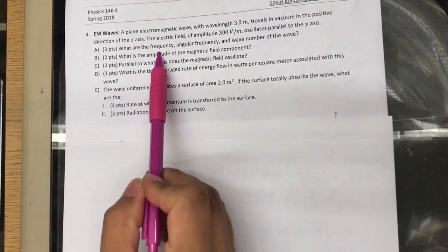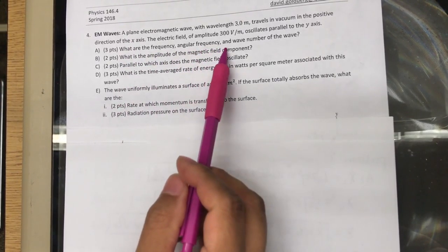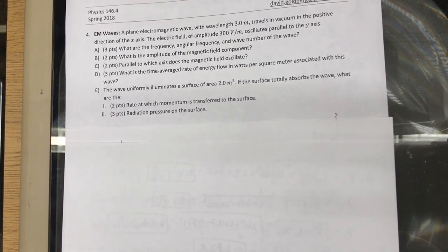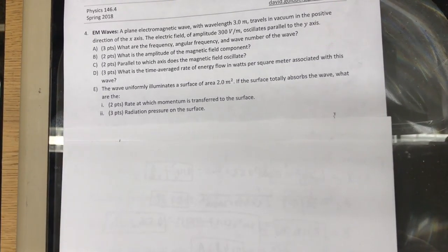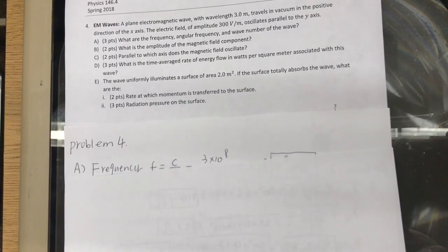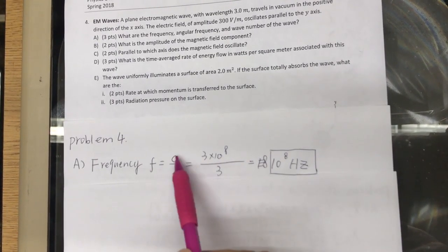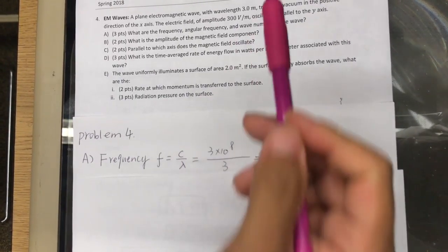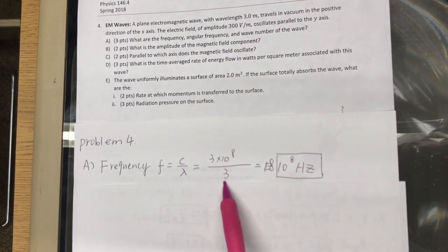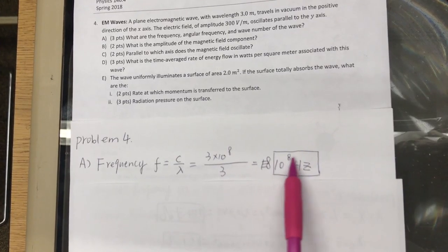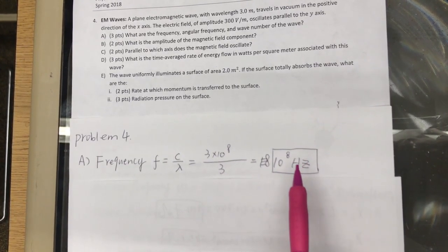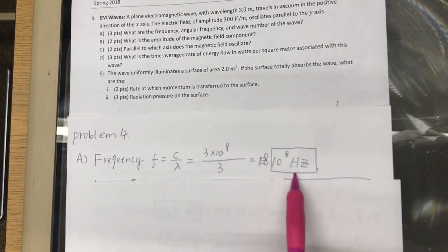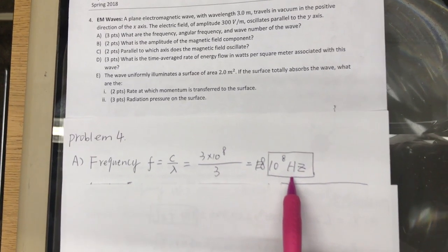What are the frequency, angular frequency, and wave number of the wave? Classic plug-and-chug. First equation is frequency equals the speed of light divided by wavelength. We know the speed of light. We're given the wavelength, which is 3 meters, and we get 10 to the 8th hertz, or actually 100 megahertz.